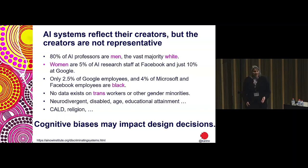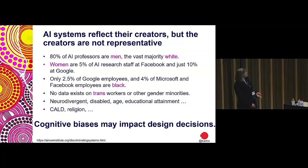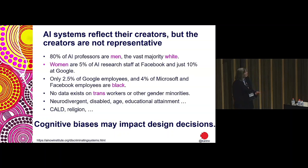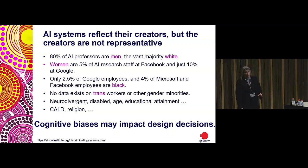If we look at that right now in AI, it's a pretty bleak picture. 80% of AI professors are men, and the vast majority of those are white. I'm happy to be in the 20% that are not men, but I am in the majority white class, and I recognize the privilege that comes with that. Women represent 5% of AI research staff at Facebook and 10% at Google.